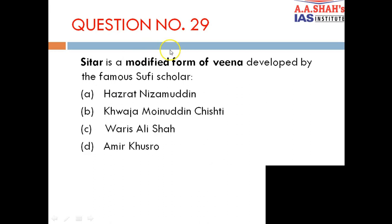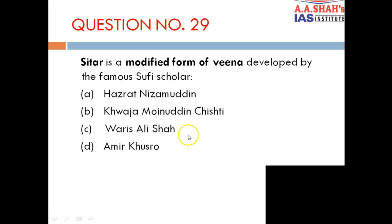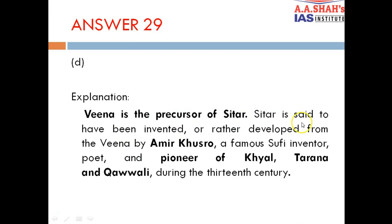Question 29: Sitar is a modified form of Veena developed by the famous Sufi scholar: A. Hazrat Nizamuddin, B. Khwaja Moinuddin Chishti, C. Waris Ali Shah, D. Amir Khusrau. The correct answer is D — Amir Khusrau. Veena is the precursor of Sitar. Sitar was developed from Veena by Amir Khusrau, the famous Sufi inventor, poet and pioneer of various musical forms like Khayal, Tarana and Qawwali during the 13th century.